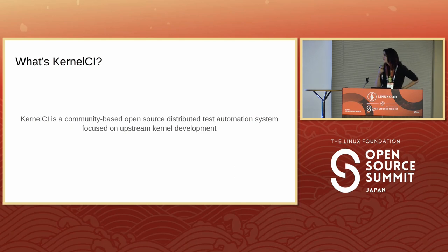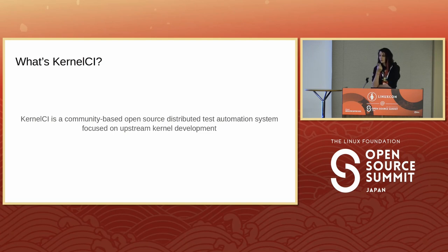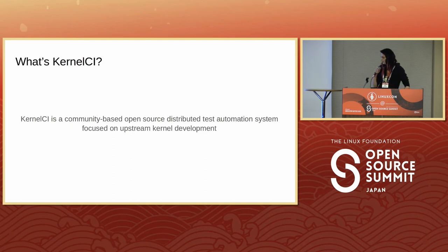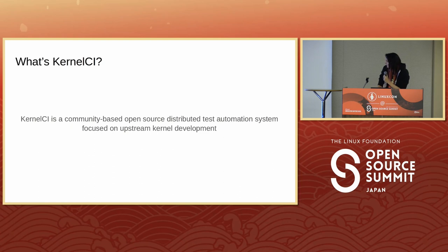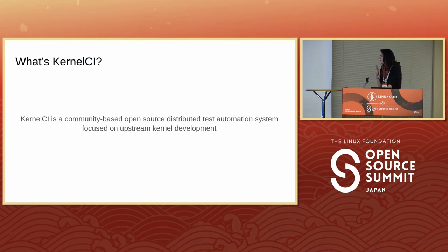KernelCI is a continuous integration system used by the Linux community. It sends mail reports to the stable mailing list — practically sending to Greg — and everyone on the mailing list can see the KernelCI reports. KernelCI is trying to take a distributed approach, so every part can theoretically be distributed.